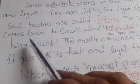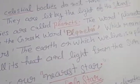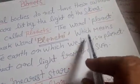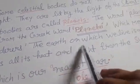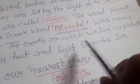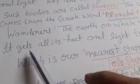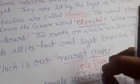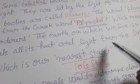The word planet comes from the Greek word plantai. जो planet word है, वो Greek word plantai से आया हुआ है. Which means wonders. जिसका मतलब होता है wonders. The earth on which we live is a planet. जो earth पर हम रहते हैं, वो earth भी एक planet है. It gets all its heat and light from the sun. Earth पर जितनी भी light और heat है, वो sun से हमें मिलती है.